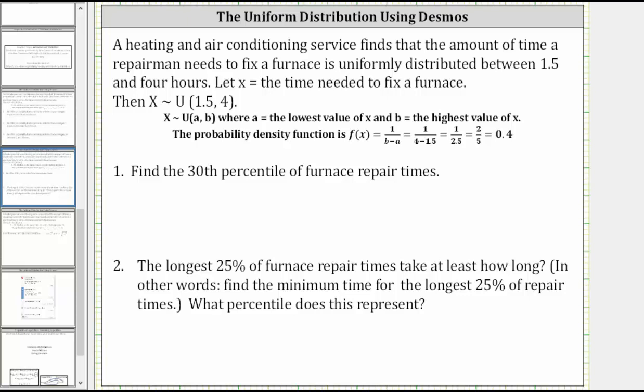This lesson will show how to use Desmos.com to determine percentiles of a uniform distribution. A heating and air conditioning service finds the amount of time a repairman needs to fix a furnace is uniformly distributed between 1.5 and four hours.